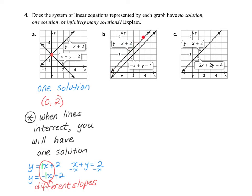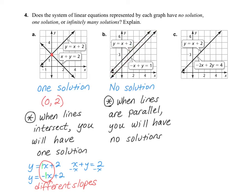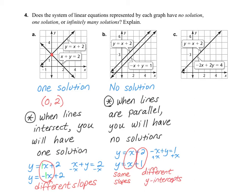Let's take a look at letter B. This time I have two lines that are parallel. Any time you have lines that are parallel, you are going to have no solutions. If we look at these equations, we have y = x + 2 and -x + y = 1. Solving for y gives y = x + 1. You'll notice that I have the same slope of 1 but different y-intercepts. Any time you have the same slope and different y-intercepts, the lines will be parallel.